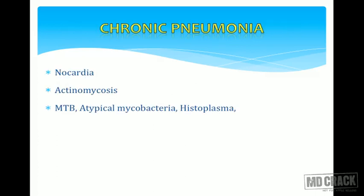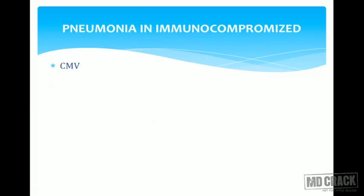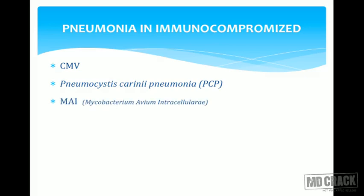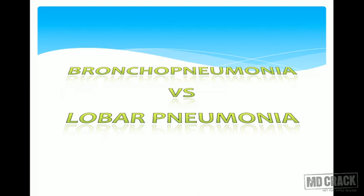Chronic pneumonias are due to low-virulence organisms like Nocardia and Actinomyces, which are rare causes. Mycobacterium tuberculosis — tubercular pneumonia — can also cause chronic pneumonias. Pneumonia in immunocompromised patients like HIV and AIDS patients is very commonly due to cytomegalovirus, or Pneumocystis carinii pneumonia, which is extremely common in AIDS patients. Atypical mycobacteria such as Mycobacterium avium intracellulare, as well as fungi like Aspergillus and Candida, are also common in HIV, AIDS, and diabetic patients.